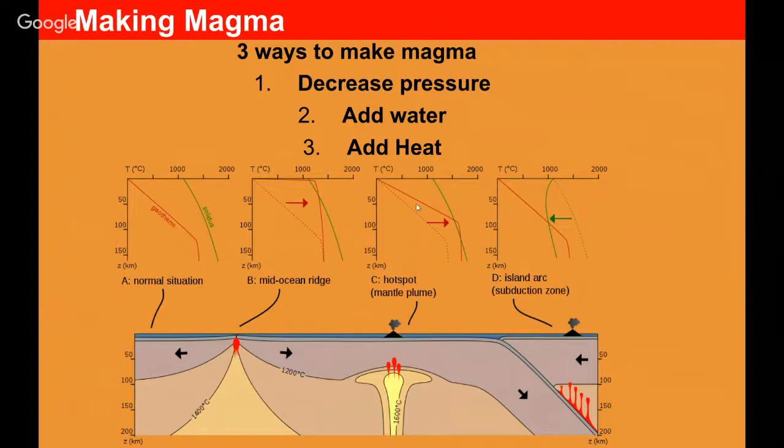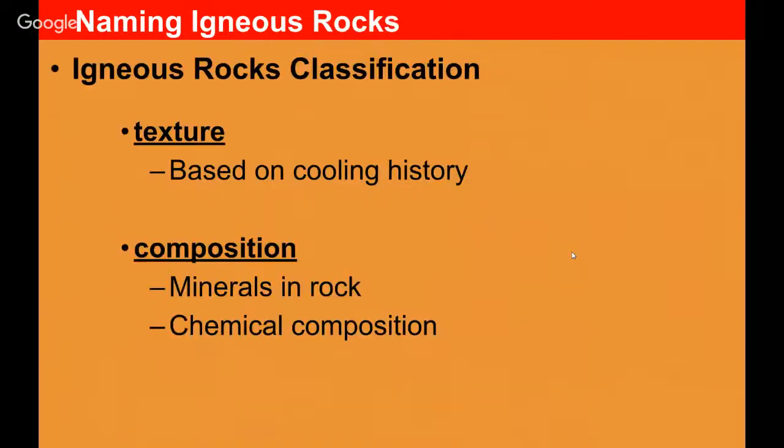Your hot spot, where you're adding heat at some depth, pushing that line over past that line of rock meltage. And then finally, adding water changes the properties of your rock and moves that line of rock meltage over, allowing for melting to occur. Solidus is what we call it.